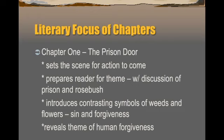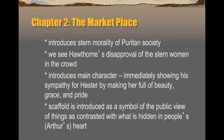When we take a look at the theme of human forgiveness, the fact that our major character starts off in prison — and then in Chapter 2, the fact that she won't reveal the other guilty party's name — starts setting up the theme of human blame, guilt, and our willingness to forgive. Chapter 2 is The Marketplace. We start getting the stern morality of Puritan society, and we see Hawthorne's disapproval of the stern women in the crowd. The narrator's sympathy for Hester is immediately evident — she's full of beauty, grace, and pride, everything the stern women are not.